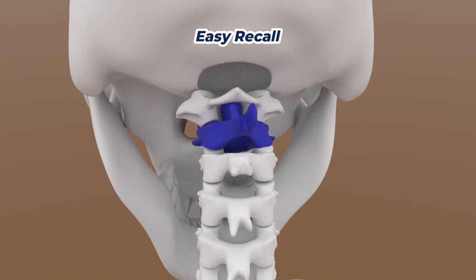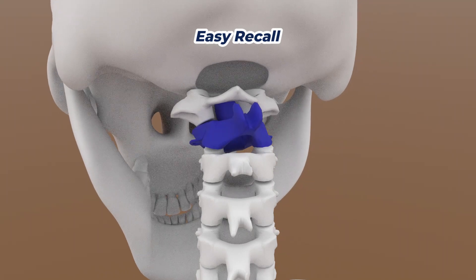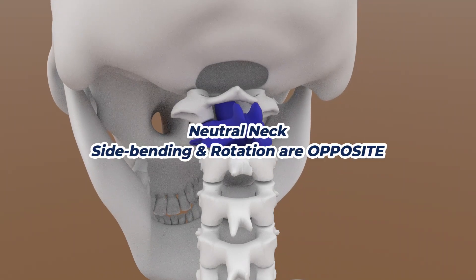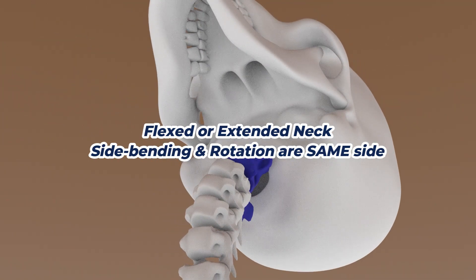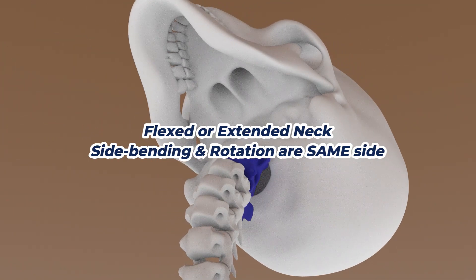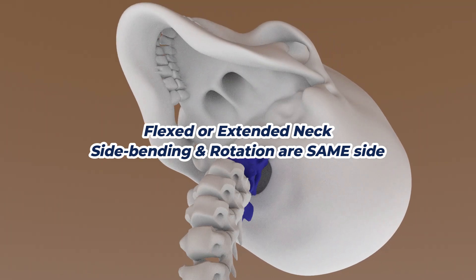To make it easier to remember: if the neck is in a neutral position, rotation will be coupled with opposite direction side bending. If the neck is either flexed or extended, rotation will be coupled with same direction side bending.